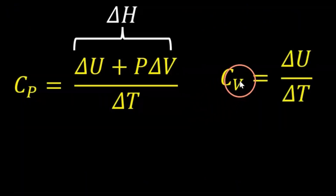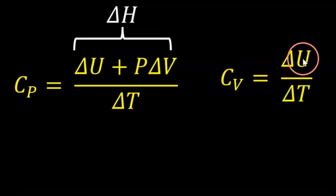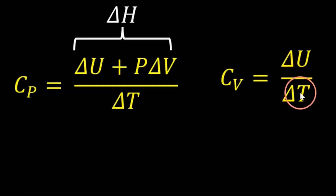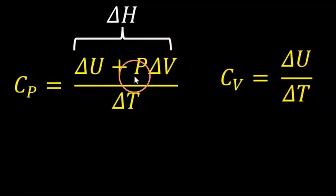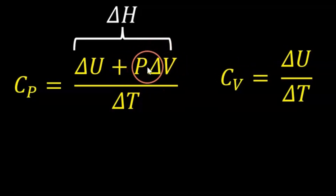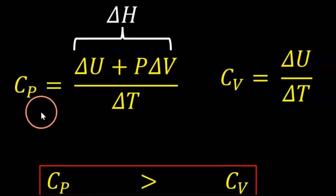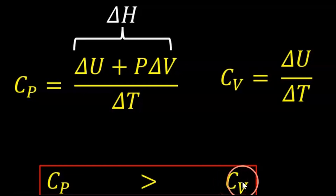At constant volume, that equals the change in internal energy over the temperature. Because we have this extra term — the negative of the work done under constant pressure — we can see that the heat capacity at constant pressure is greater than the heat capacity at constant volume.